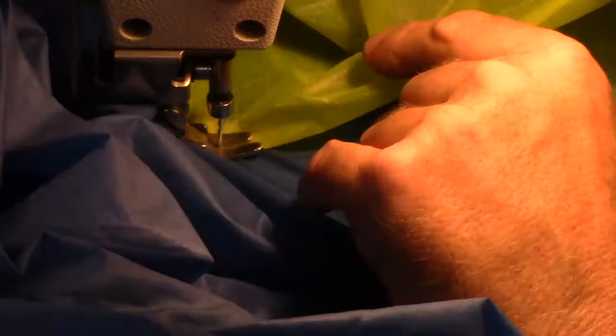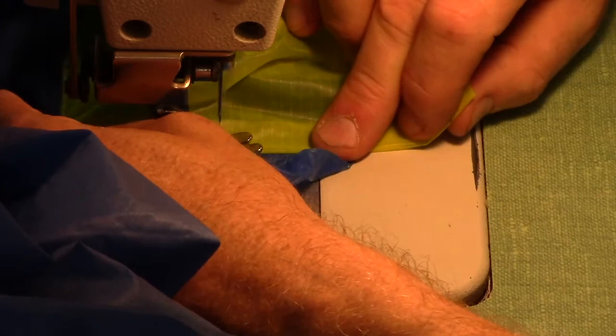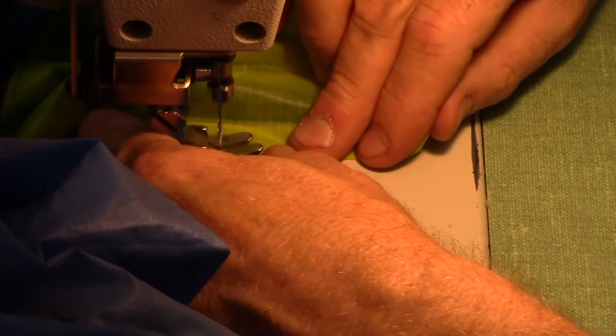When you get to the third side, the last side, remember to sew all the way off the canopy and keep going all the way to the end of the patch. This again is important to avoid that problem with stitches fraying out onto your patch.